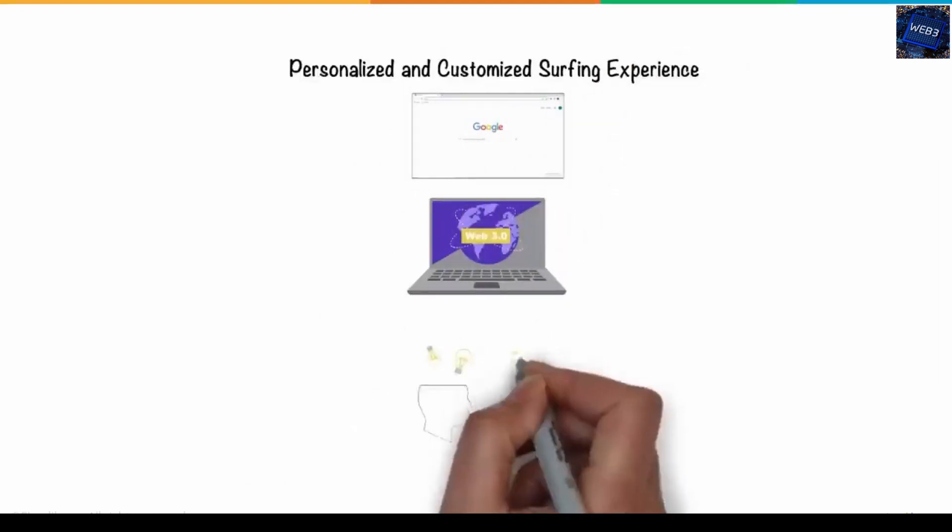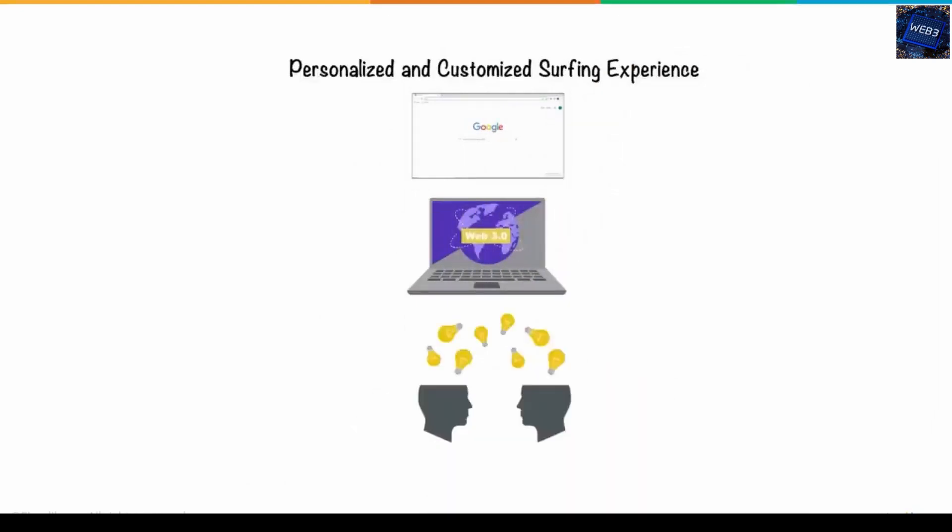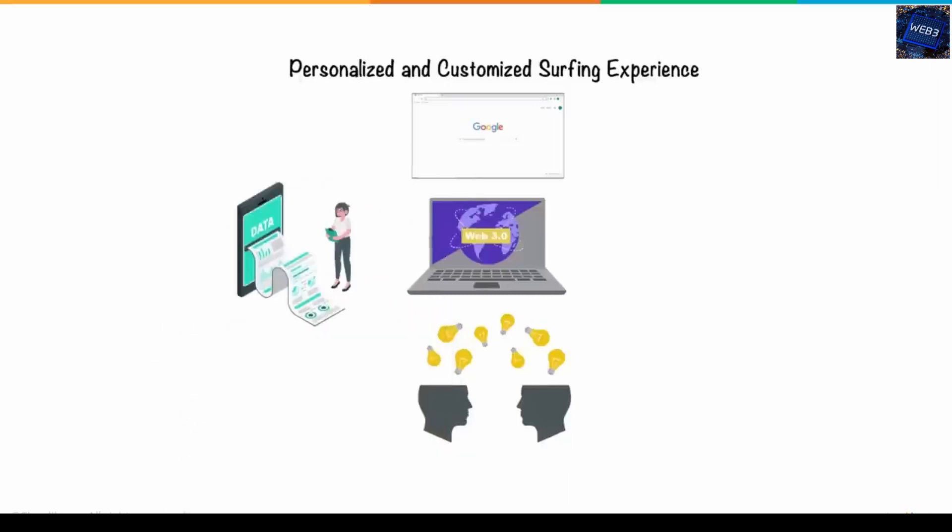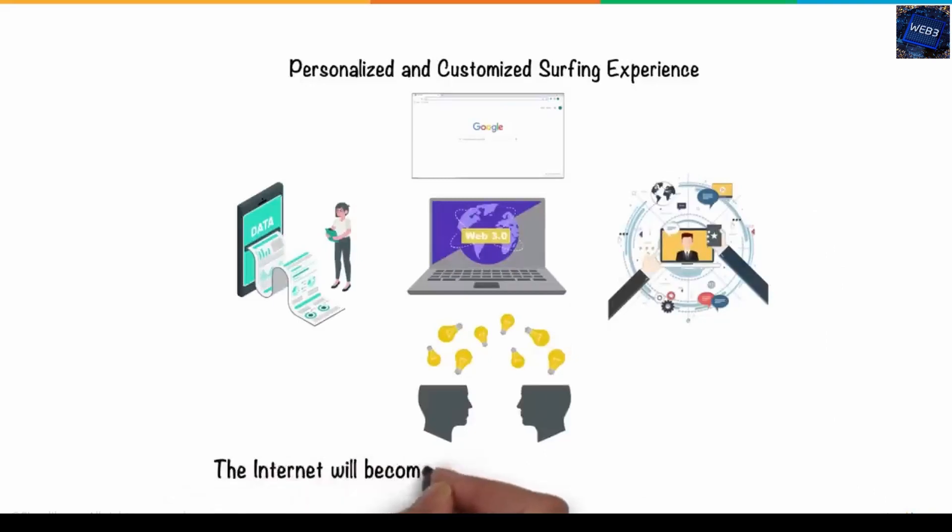Web 3.0 will offer a more personalized and customized surfing experience, and a smarter and more human-like search assistant, and other decentralized benefits. All of which are believed to contribute to a more fair web. This will be accomplished by giving each user control over their data, resulting in a richer overall experience. In a nutshell, the internet will become considerably more intertwined in our daily lives when Web 3.0 arrives.